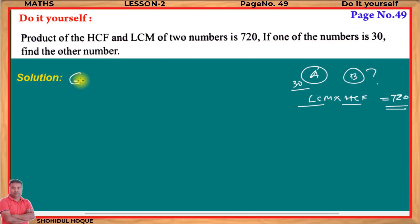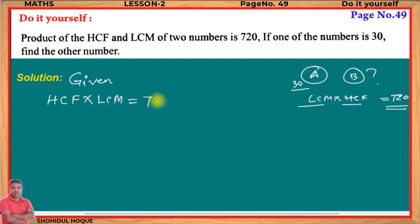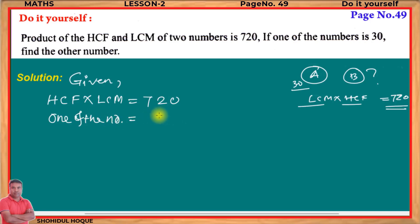First, let us write the Given section. Given: HCF × LCM = 720 — because the product of HCF and LCM means multiplying them gives 720. Also given: one of the numbers = 30. To find: the other number = ?